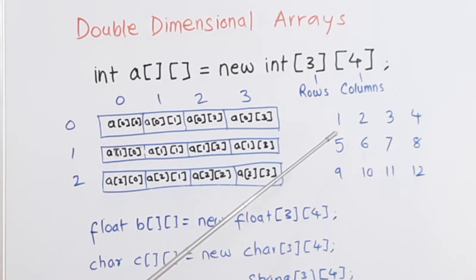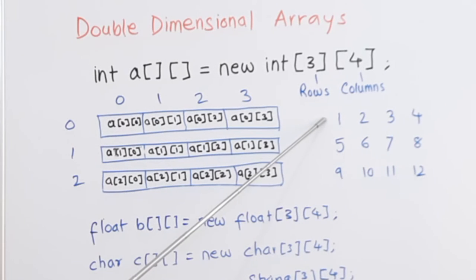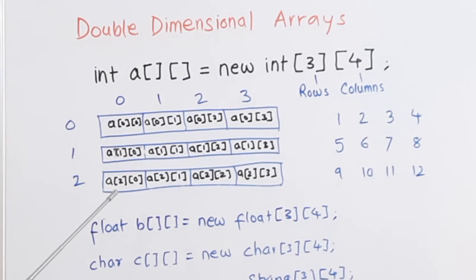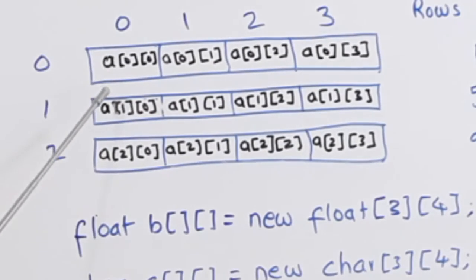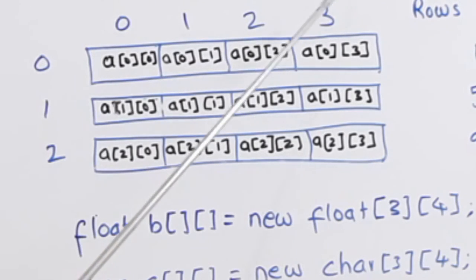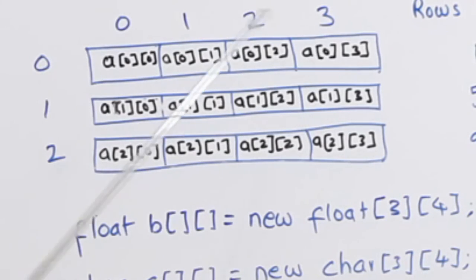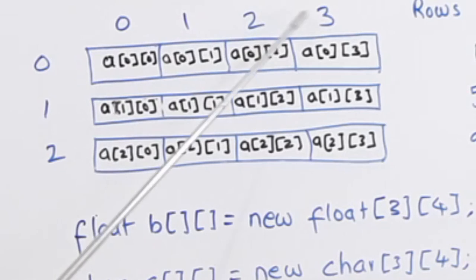Now let us see how we can address individual cells of this matrix. As we know, the array index begins with 0. This is column number 0, 1, 2, 3. These are four columns represented by 0, 1, 2, 3, and these are three rows represented by 0, 1, 2.